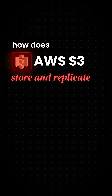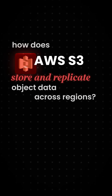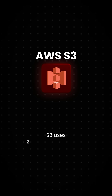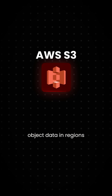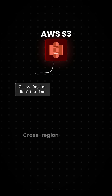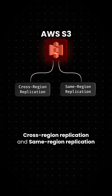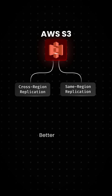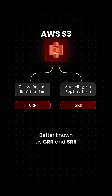How does AWS S3 store and replicate object data across regions? S3 uses two methods for copying object data in regions: cross-region replication and same-region replication, better known as CRR and SRR, respectively.